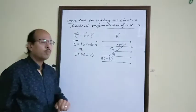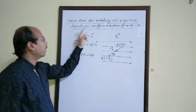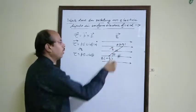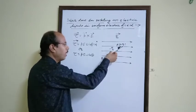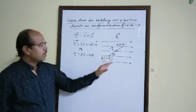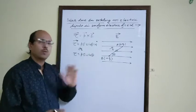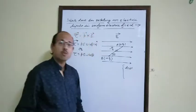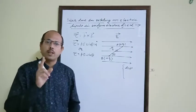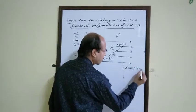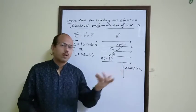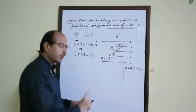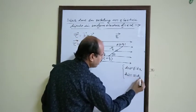Our aim is to find out work done in rotating an electric dipole in uniform electric field. We want to rotate the dipole by some angle theta, so we have to do some work. From class 11 mechanics, small amount of work in linear motion is given by dW equals to F dx. For total work we use integration. But this is for linear motion, and here it is rotational motion. Therefore in rotational motion, dW is given by tau d-theta.